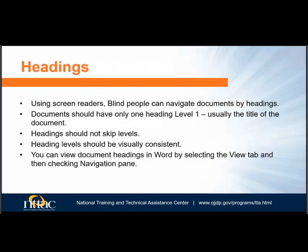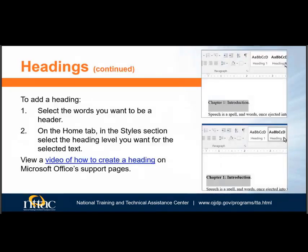Let's begin by talking about headings. Blind people use screen readers when reading documents. By pushing certain keys, they can either go through the document and hear only the headings, or press a set of keys and call up a list of headings. Therefore, we need to make sure proper headings are used — not font effects — and that they are in the correct order. To add a heading, select the text you want to be a heading, then select the heading level (1 through 6) that you want it to be. Documents should have only one Heading Level 1 — the title — and not skip levels.